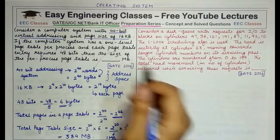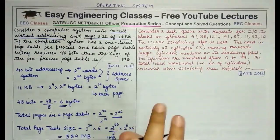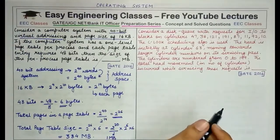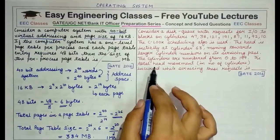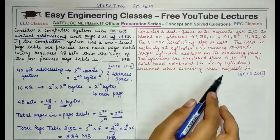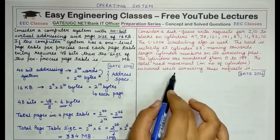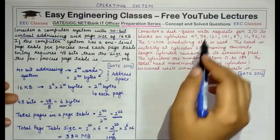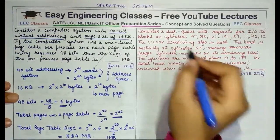Now coming to the second question. Consider a disk queue with requests for I/O to blocks on cylinders in a particular order. The CLOOK scheduling algorithm is used. The head is initially at cylinder 63, moving towards larger cylinder numbers on its servicing pass.